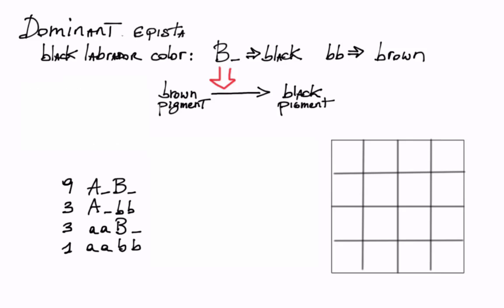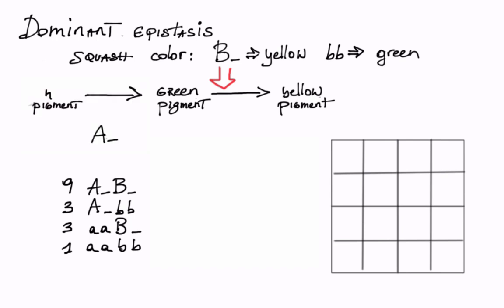Let's now consider dominant epistasis in squash. The setup is very similar to that of the black lab dog. The B gene encodes a protein that converts green pigment into yellow. The accumulation of pigment, however, is controlled by an epistatic gene called A. However, instead of promoting pigment accumulation, A is a repressor that blocks it. Pigment can only be formed in the absence of the big A allele, such as when the little A allele is homozygous.